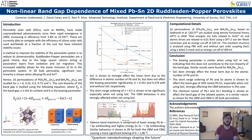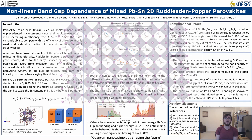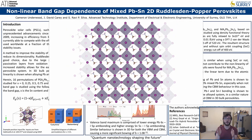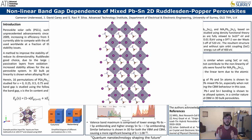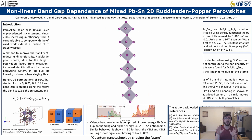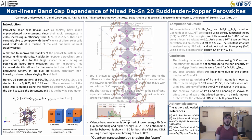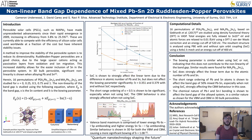One method to improve the stability of a perovskite is to reduce its dimensionality. This can be achieved by slicing off layers of the perovskite along one axis and then attaching a large bulky cation to either side. This bulky cation can help sequester external oxidation as well as unwanted ion migration.